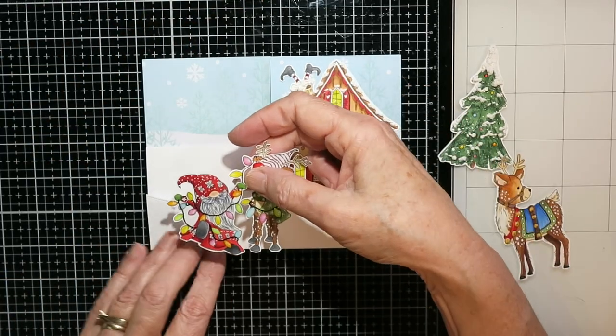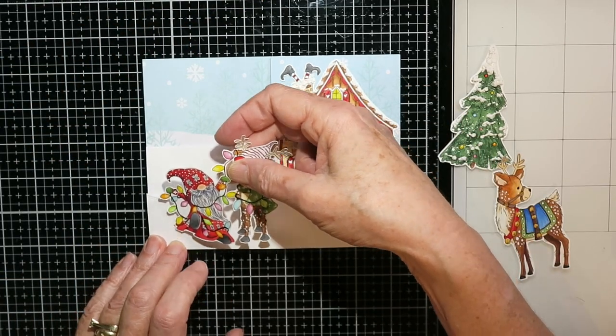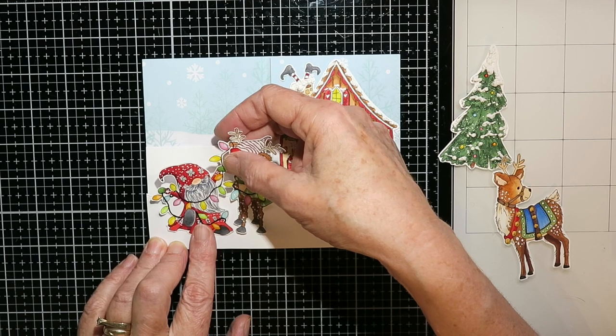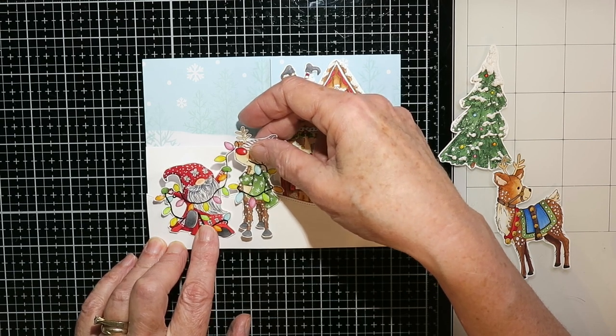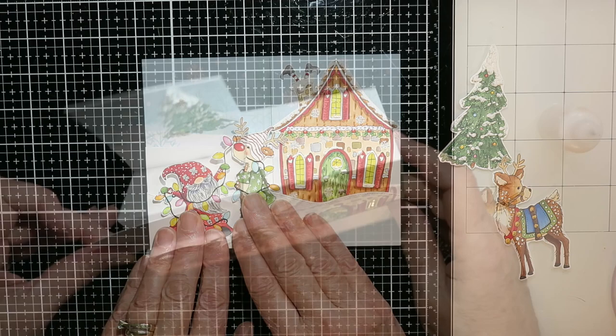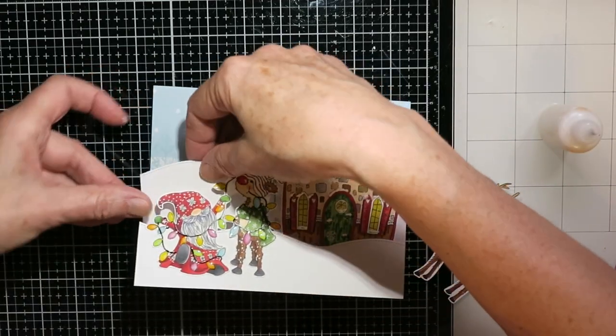Okay, so here I am gluing my little gnome and Rudolph down. I've only glued the bottom part just where they're going to be on the snow bank.